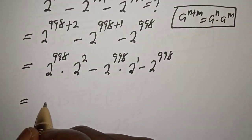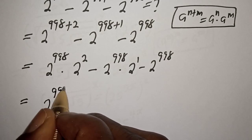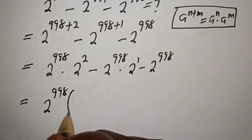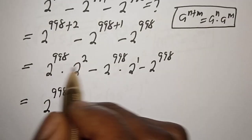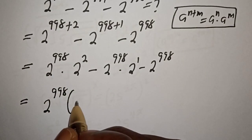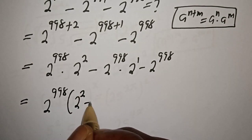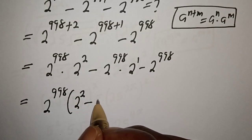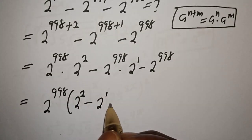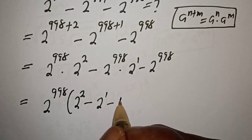2 raised to power 998 is common — let's bring it out. If we factor it out, we have 2 squared minus 2 raised to power 1 minus 1.